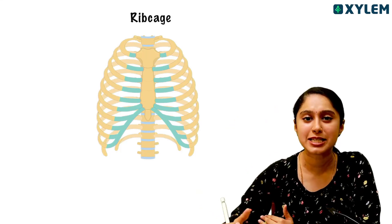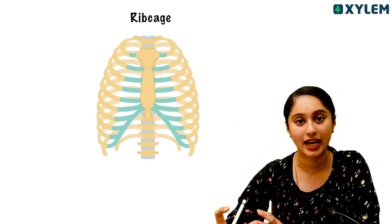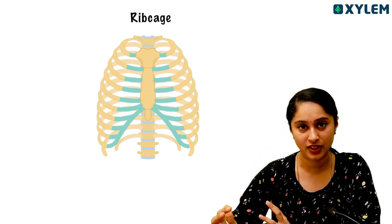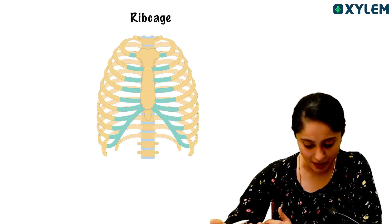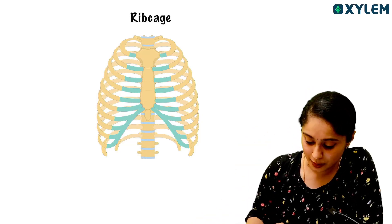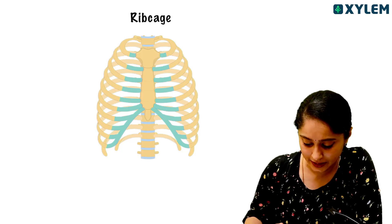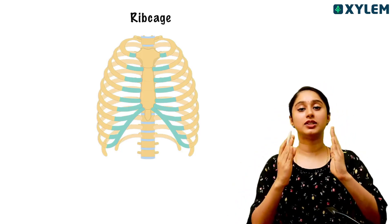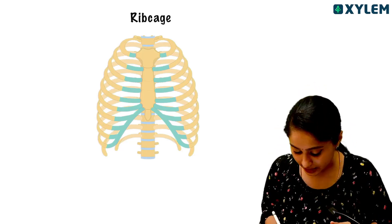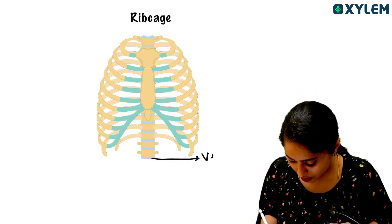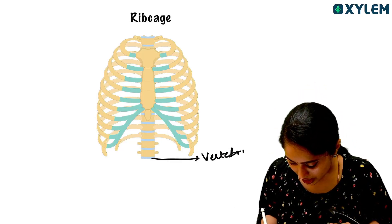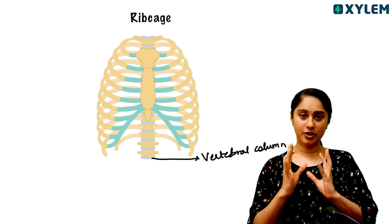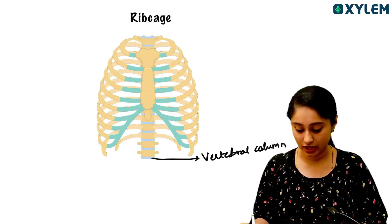In the skeletal system, you can say the rib cage. Rib cage related questions are very frequently repeated. In the rib cage, the rib cage is dorsally connected to the vertebral column. All ribs are attached to the vertebral column dorsally.